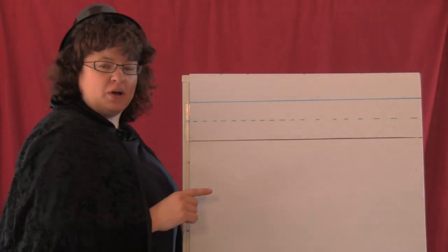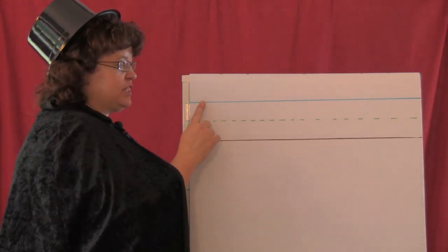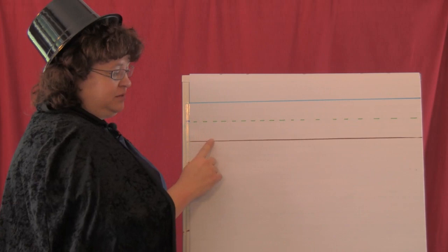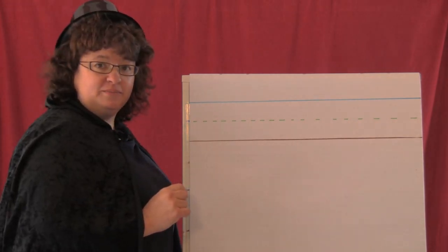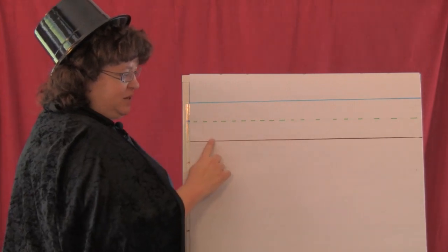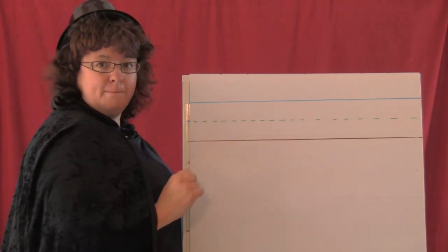The first one is lowercase b. And it starts at the top line and we say, big line down, little around, b. Let's do it again. Big line down, little around, b.